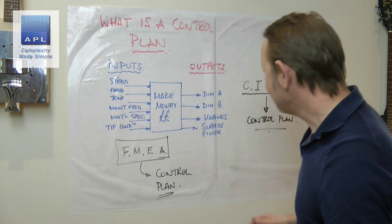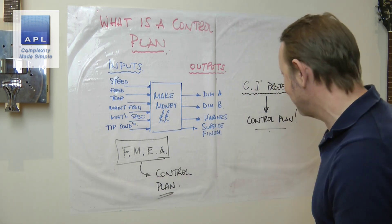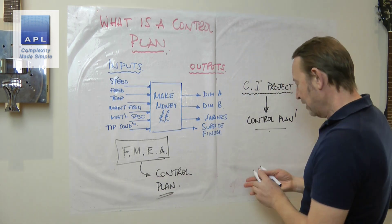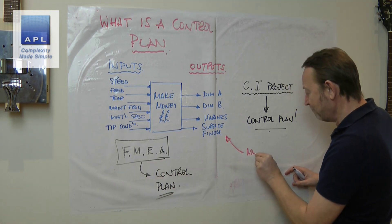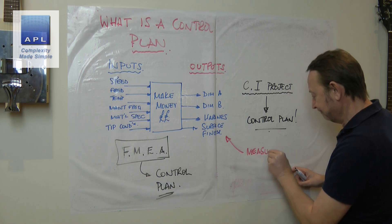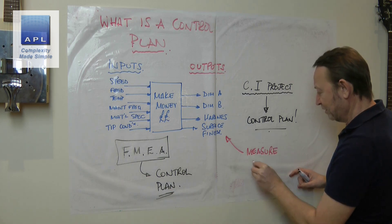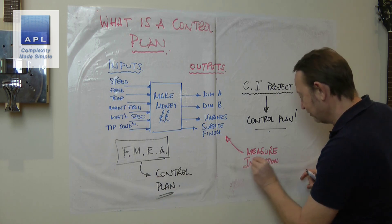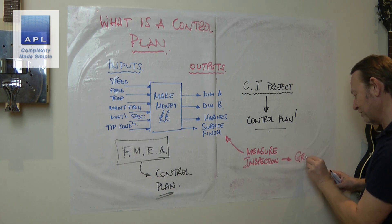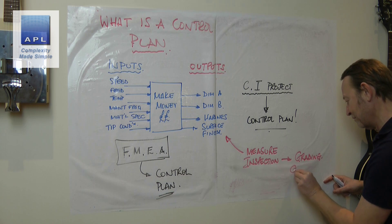And eventually you do some kind of continuous improvement project and what does the improvement project do? Well, it has to tidy up the mess that you created because you didn't do this properly. What should come out of the continuous improvement project? A control plan.